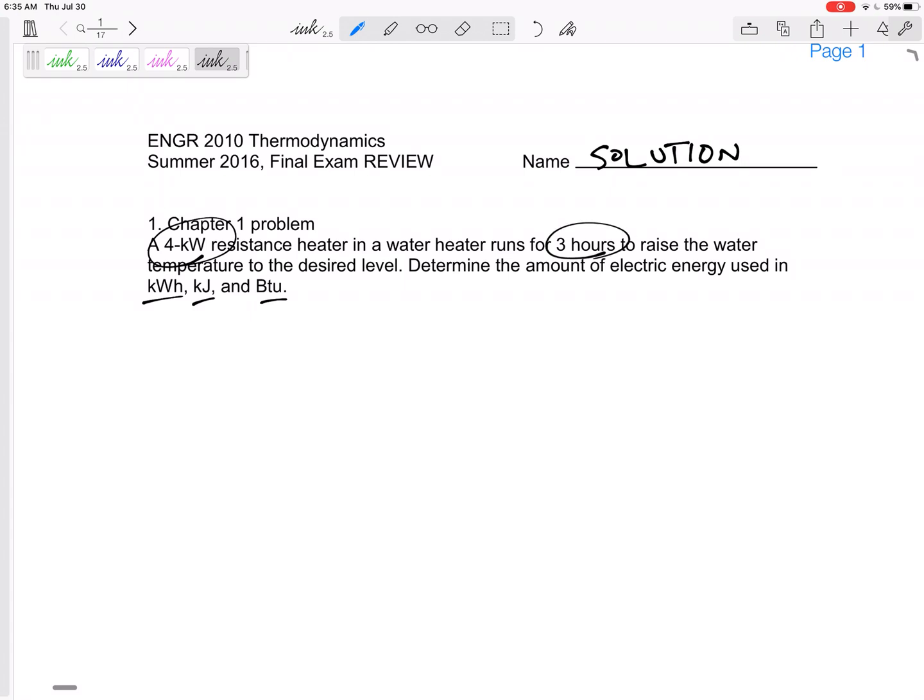Kilowatt running for three hours. So even if you didn't really know, but this is a power, this is a time. The units just show you what to do. Four kilowatts running for three hours, it's 12 kilowatt hours.